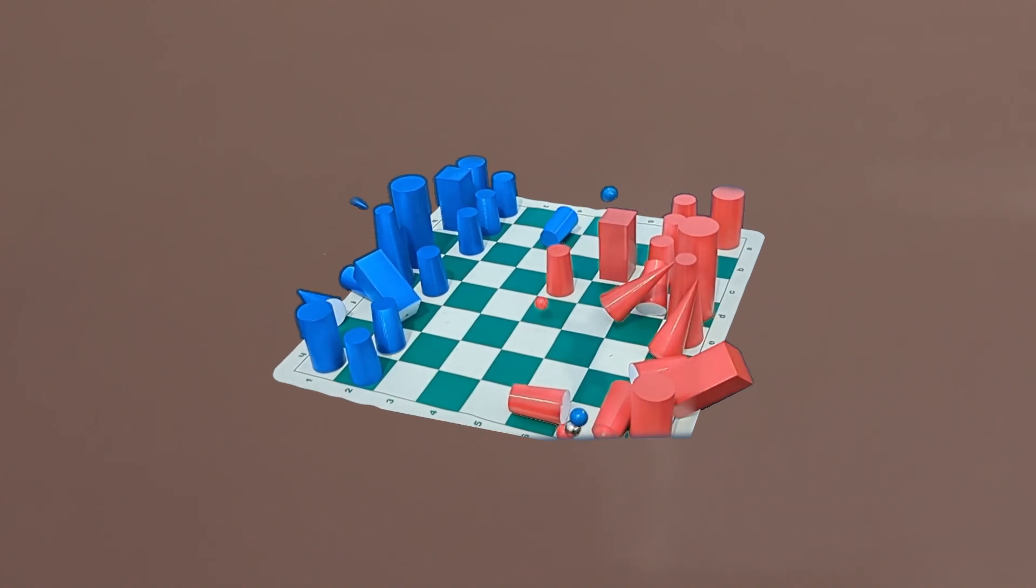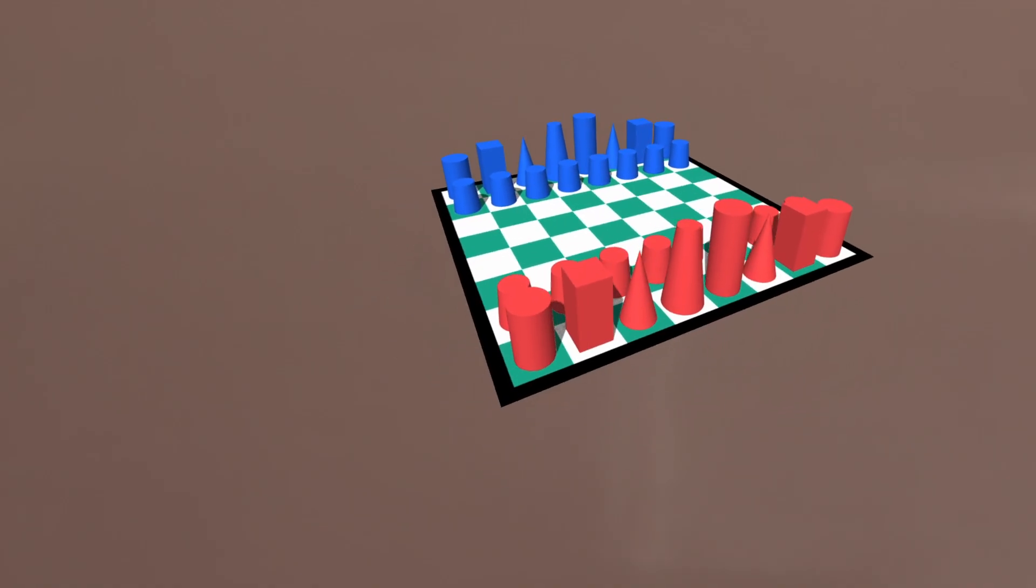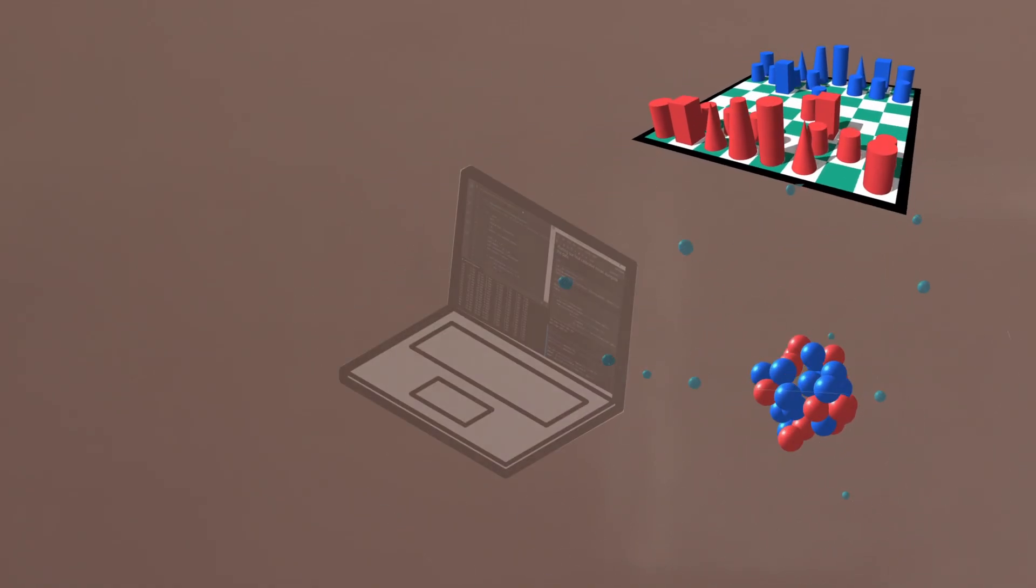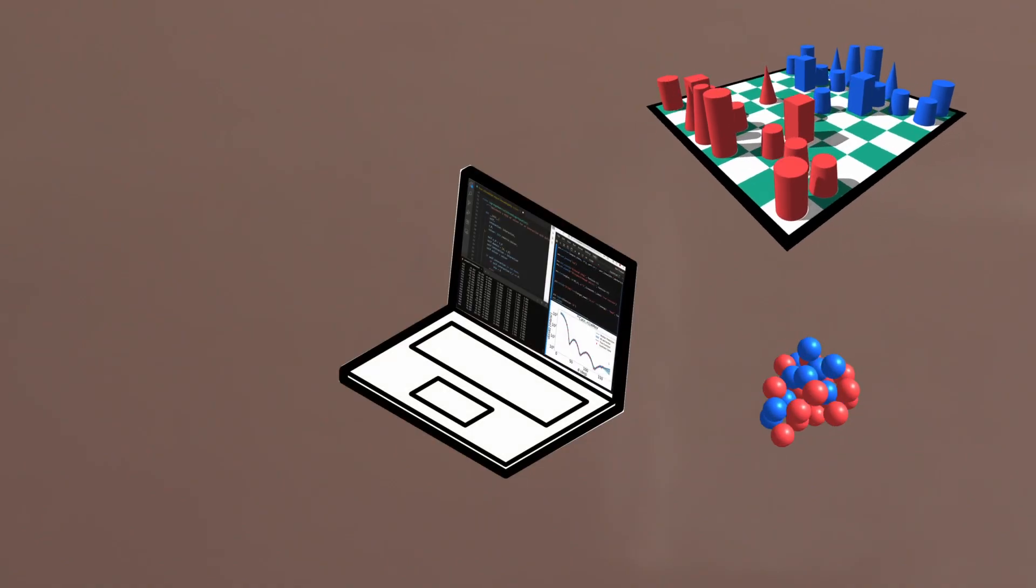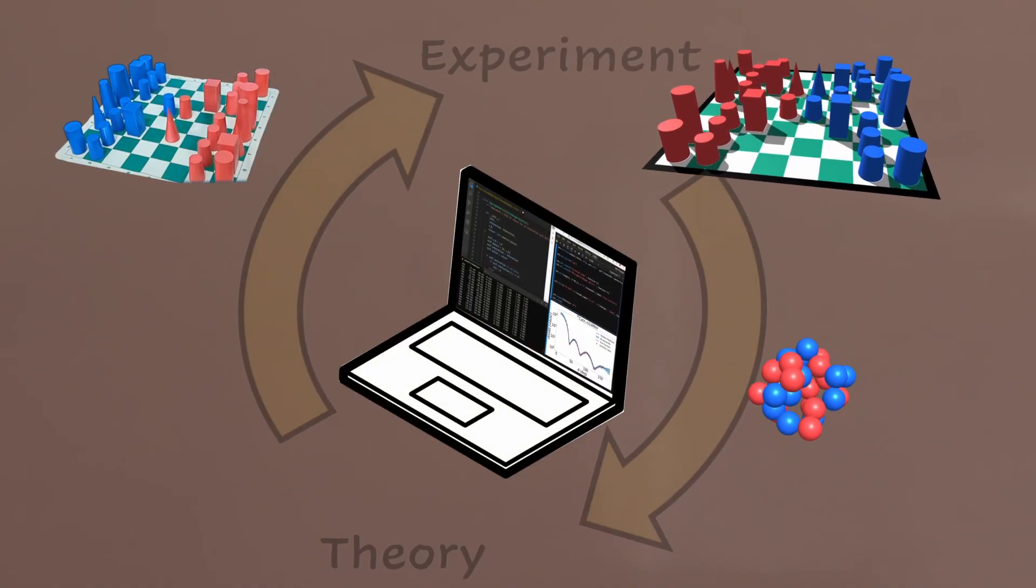Some of the pieces fly everywhere and our detectors can catch a few. The challenge is then to put the nucleus back together and learn something about the rules that govern its dynamics. For that we rely on theoretical models to simulate how the pieces were moving and then contrast with our observations in what is called the theory experiment cycle.